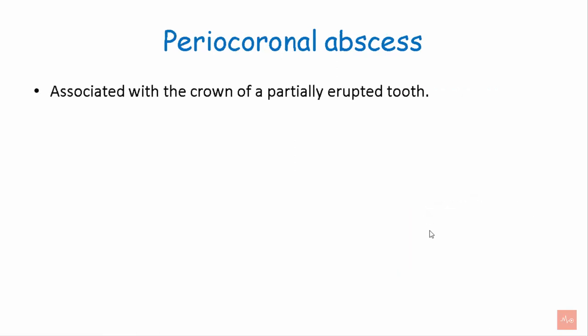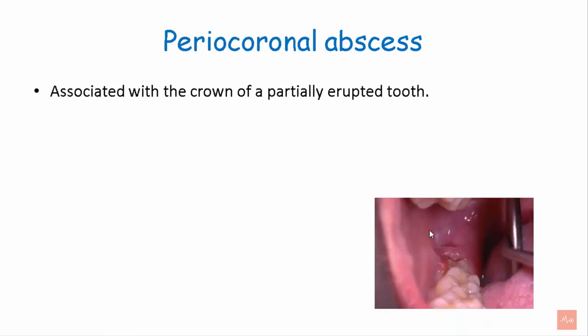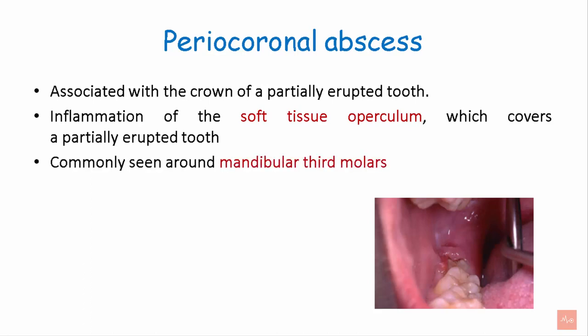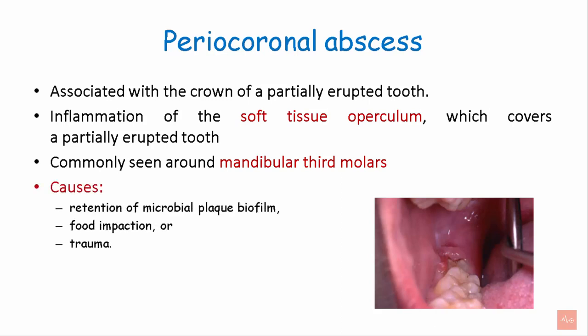A pericoronal abscess is associated with the crown of a partially erupted tooth. It is the inflammation of the soft tissue operculum covering the partially erupted tooth. It is commonly seen around mandibular third molars, and the causes include retention of microbial plaque biofilm, food impaction, or trauma.